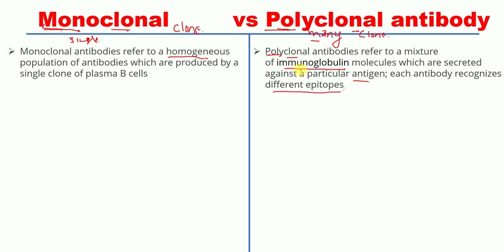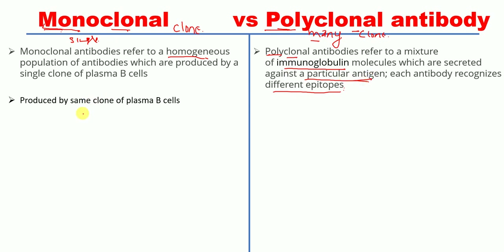Polyclonal antibodies are produced by multiple clones of plasma B cells and are therefore a heterogeneous population — a mixture of different antibodies raised against a particular antigen.